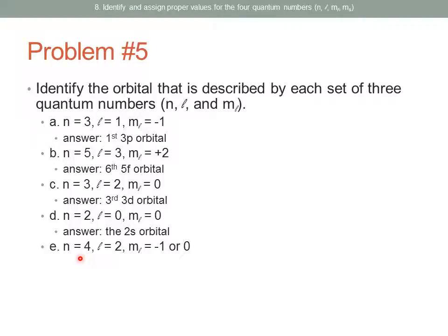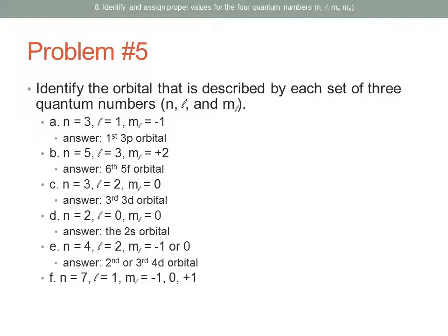For N=4, L=2 with M_sub_L of either negative 1 or 0: this is a 4D sublevel. With the lowest M_sub_L being negative 2, negative 1 corresponds to the second orbital and 0 corresponds to the third orbital. So this would be the second or the third 4D orbital. For N=7, L=1 with M_sub_L values of negative 1, 0, and positive 1 — all three — this describes all or each of the 7P orbitals.